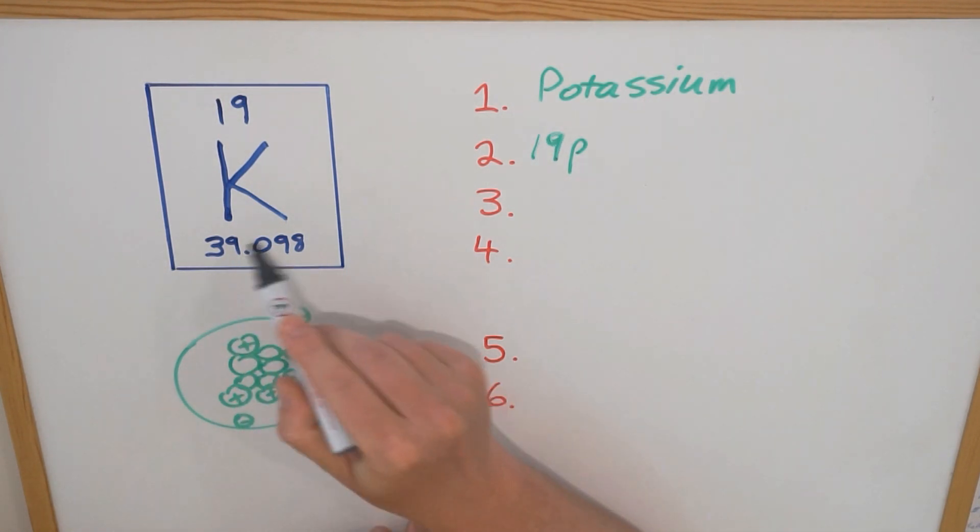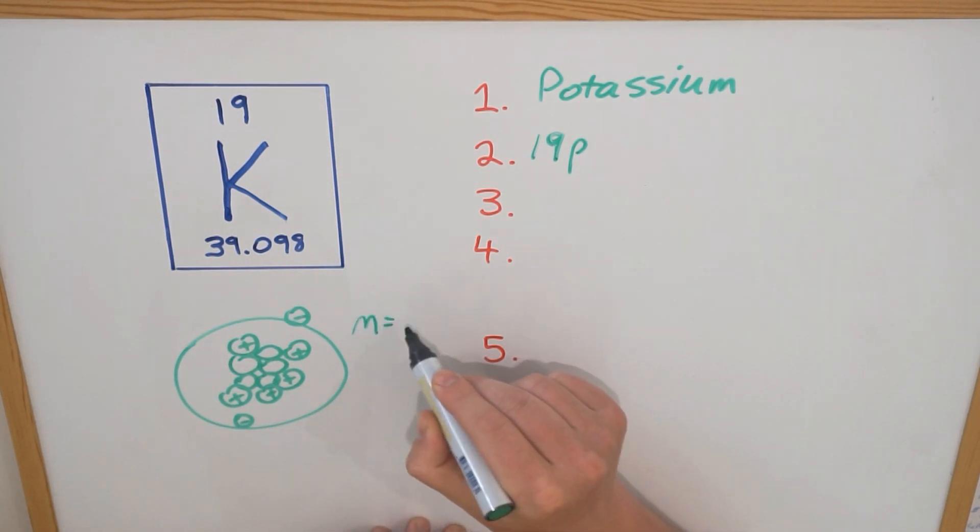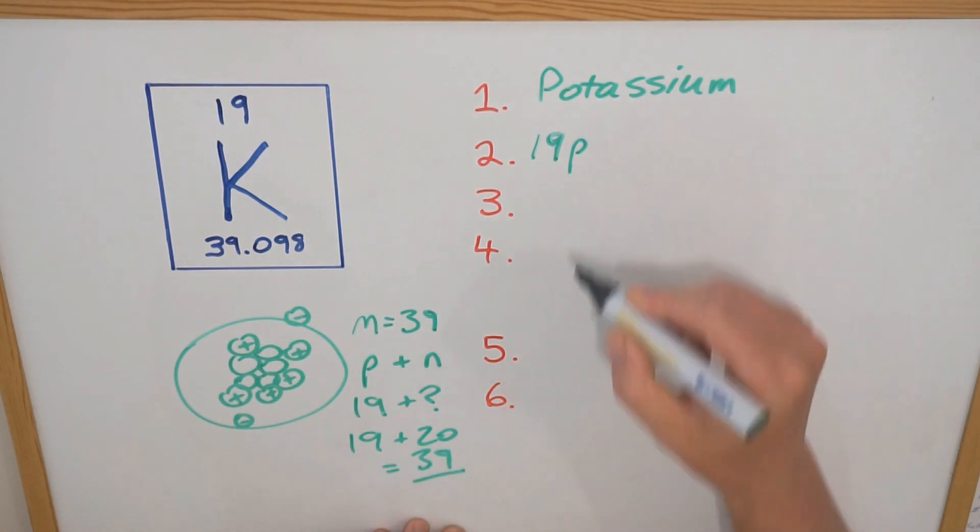This bigger number here is the mass number and in this case it's a decimal number so what we need to do is just firstly round it to the nearest whole number, so we're going to round it down to just 39. This 39 is your protons and your neutrons added together. We already know that there's 19 protons so how many neutrons must there be? There's 20, because 19 plus 20 gives us our mass number of 39.